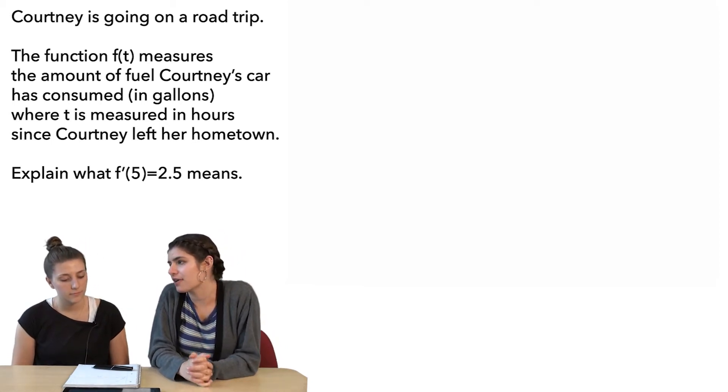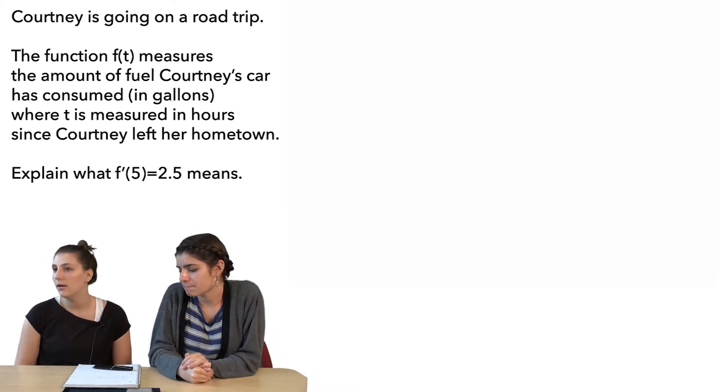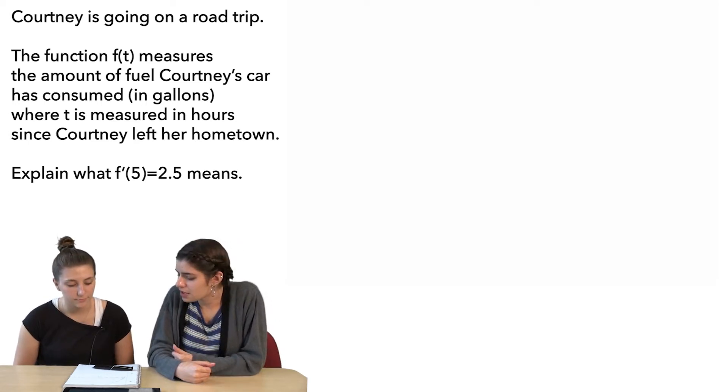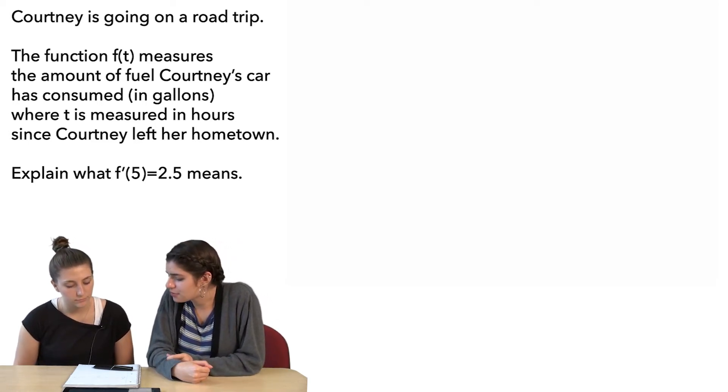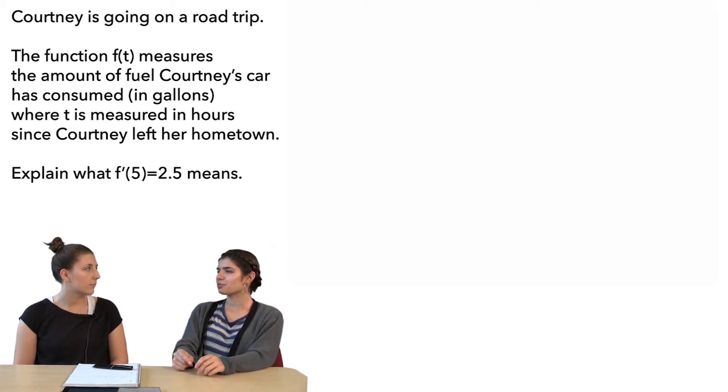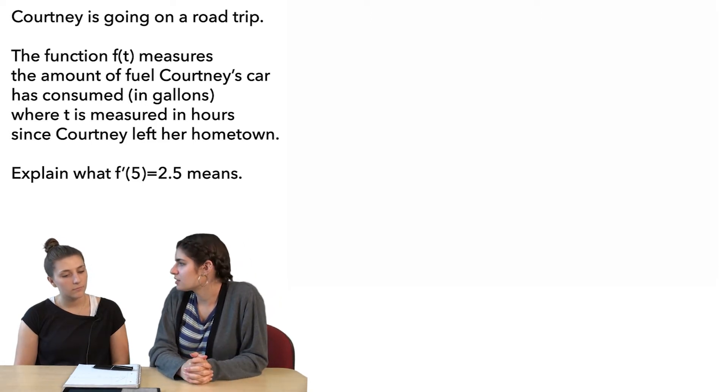So f of t, or f of 5 would be she's used 2.5 gallons since she left. Right. Okay. But we're looking for some kind of rate. Right. But this is describing the rate at 5 hours. So is it saying that at exactly 5 hours she's using 2.5 gallons? So like the instant rate of change would be 2.5 gallons.